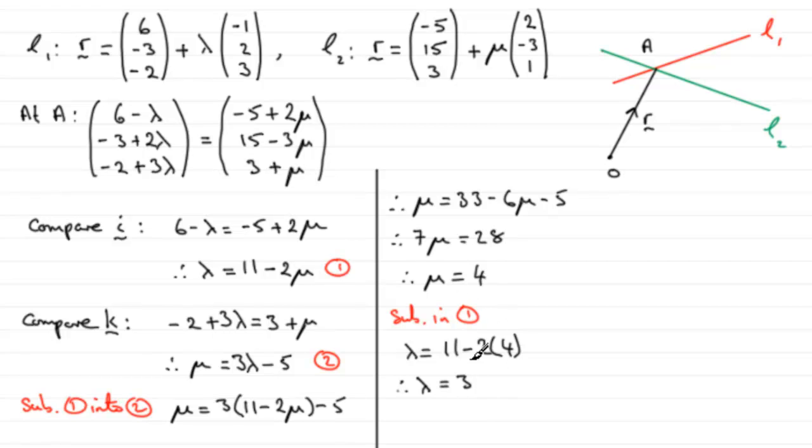Now that I've got two values for my lambda and mu, I need to check out to see whether this works in the equation that I didn't use here. So that's going to be the J components, this middle one here. So what I'm going to do is compare the J components. The equation will be minus 3 plus 2 lambda equals 15 minus 3 mu. And what I want to do now is just substitute either mu equals 4 or lambda equals 3, not both of them, into this equation.